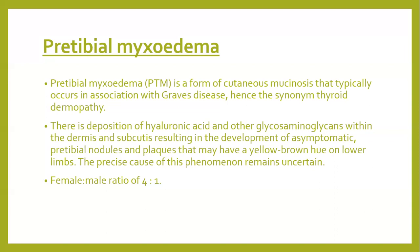This results in development of asymptomatic pretibial nodules and plaques that have a yellow-brown hue and occur on the lower limb. The typical site is the lower limb or shins, characterized by plaques which are asymptomatic and have a yellow-brown hue. The precise cause of this phenomenon is uncertain, and there is a significant male to female ratio difference.